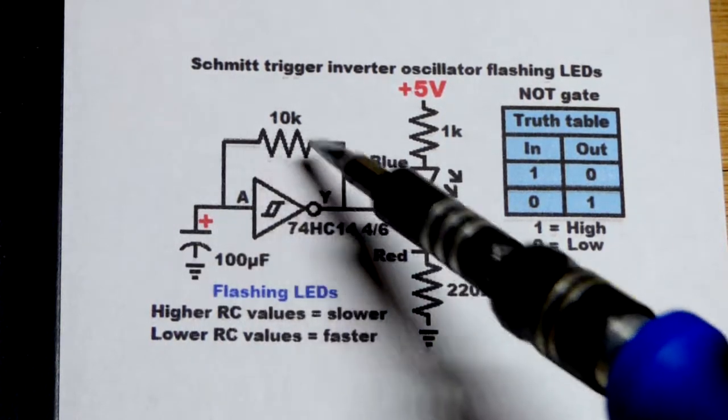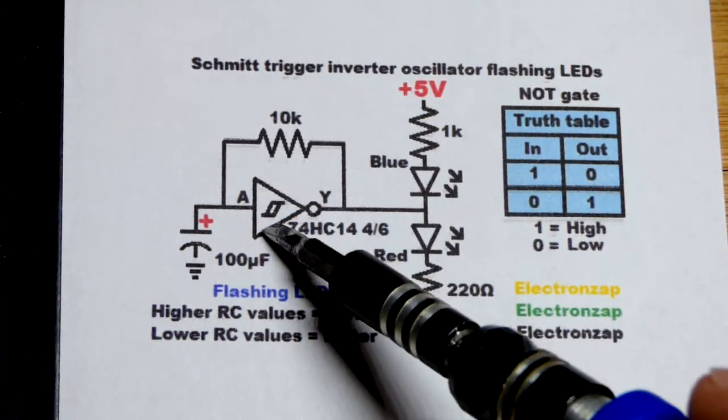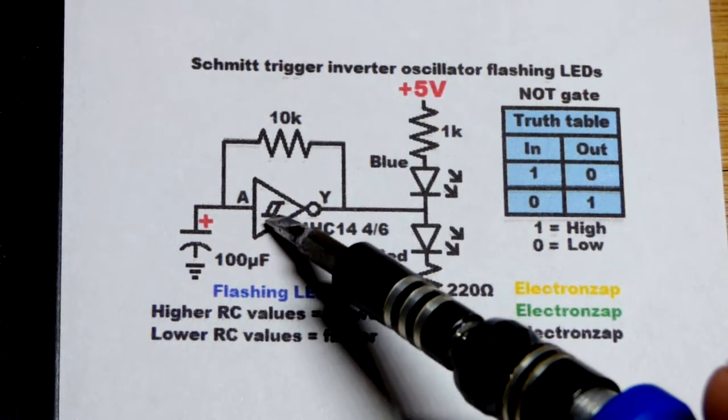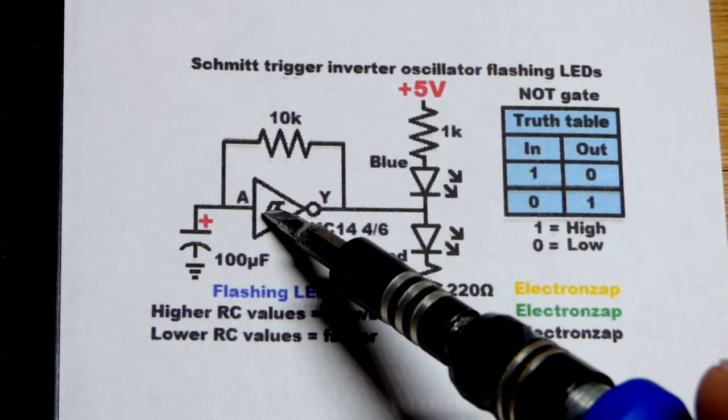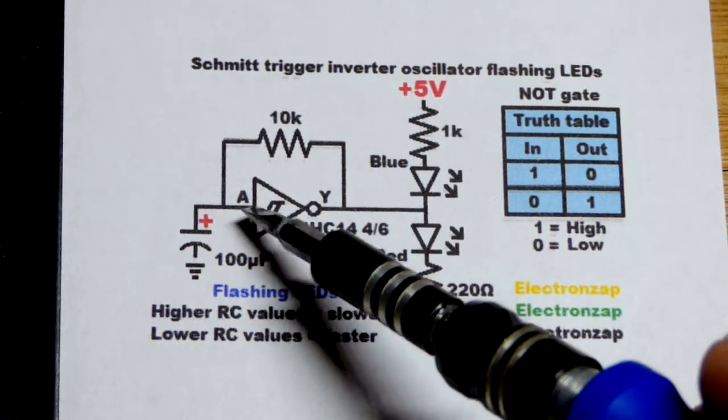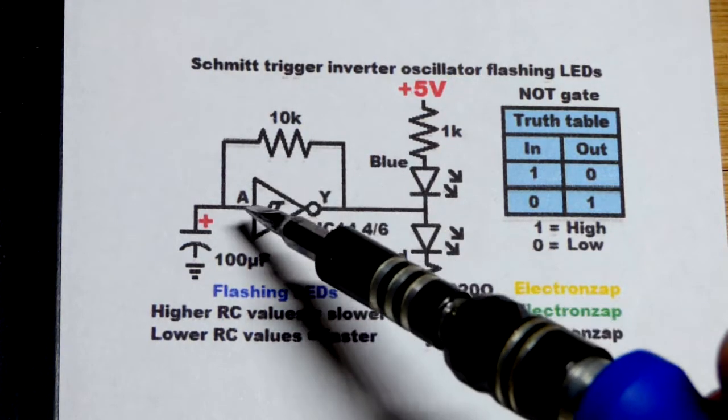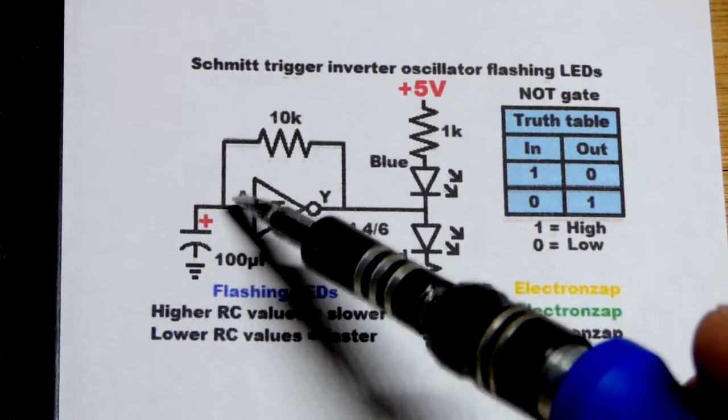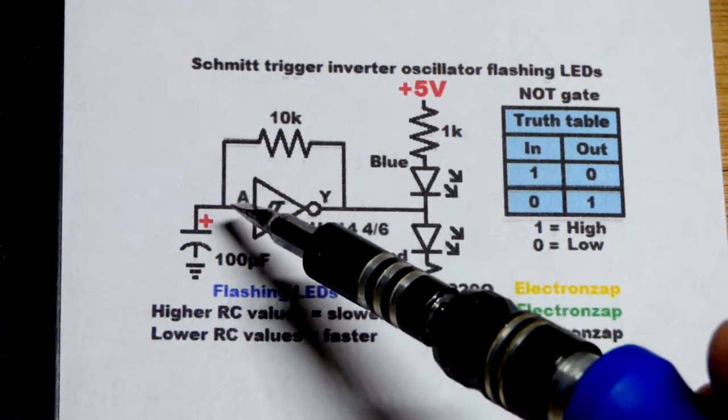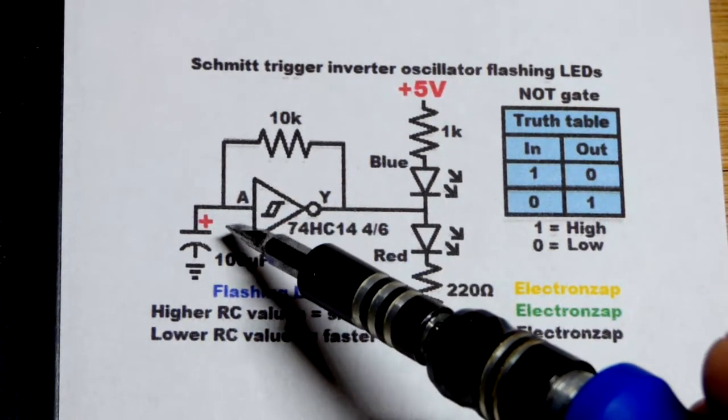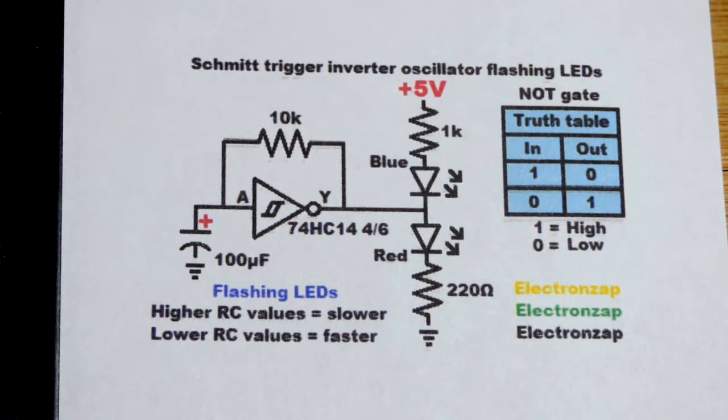Since this is a Schmitt trigger, there's not a specific voltage that divides high and low. If it's already low, it has to go up a bit extra to go high, and once it is considered a high input, then it has to go back down a bit extra to be considered low. That's the hysteresis, the middle point where it stays in whatever state it was last put into.